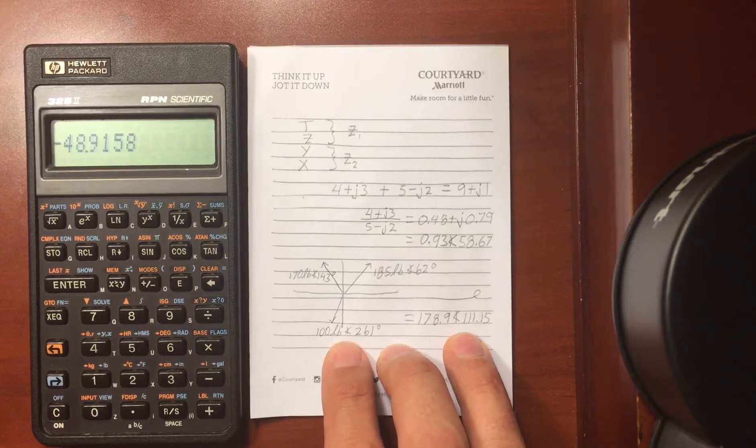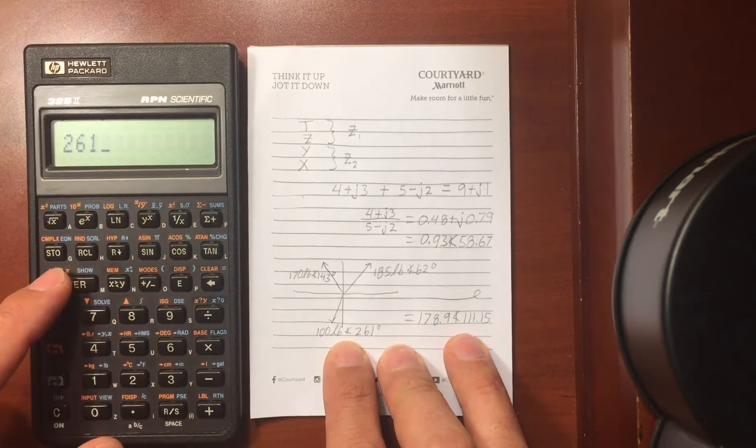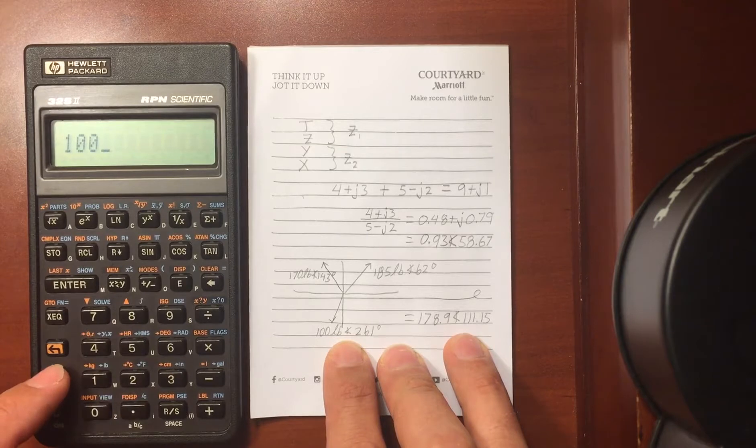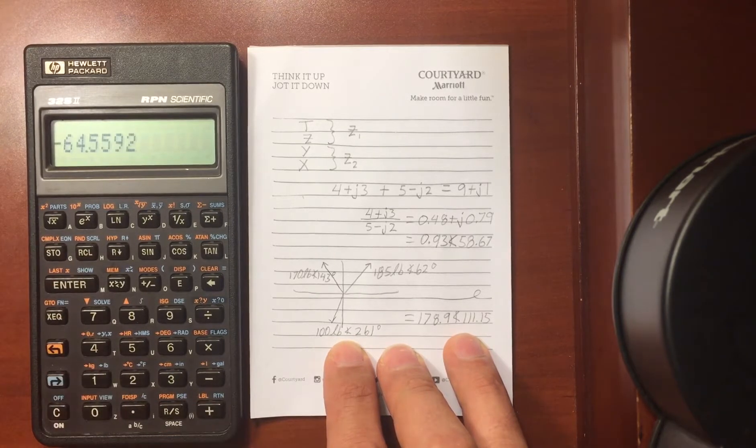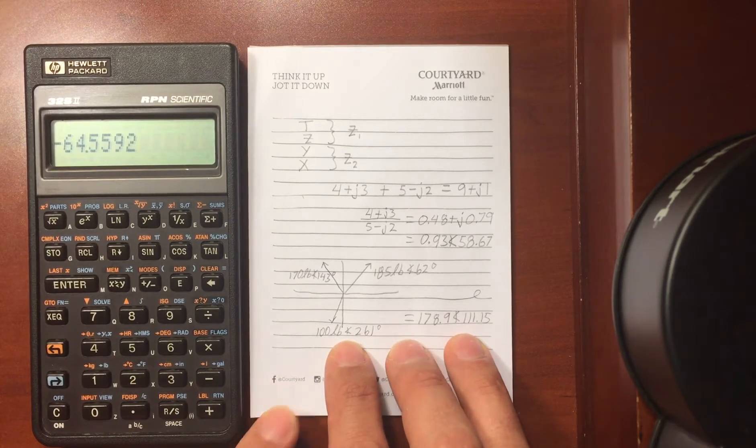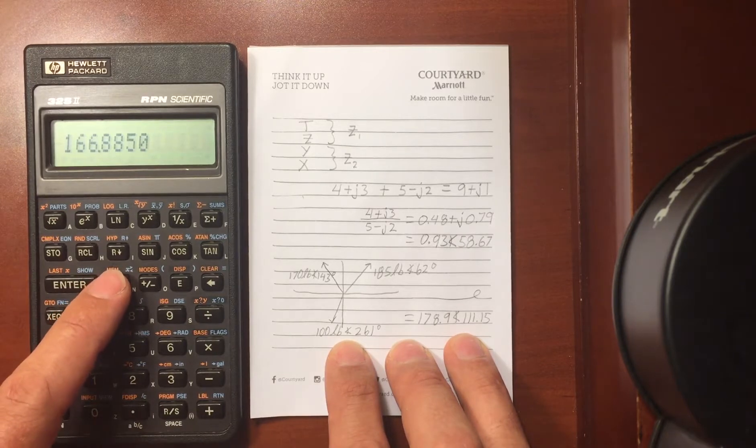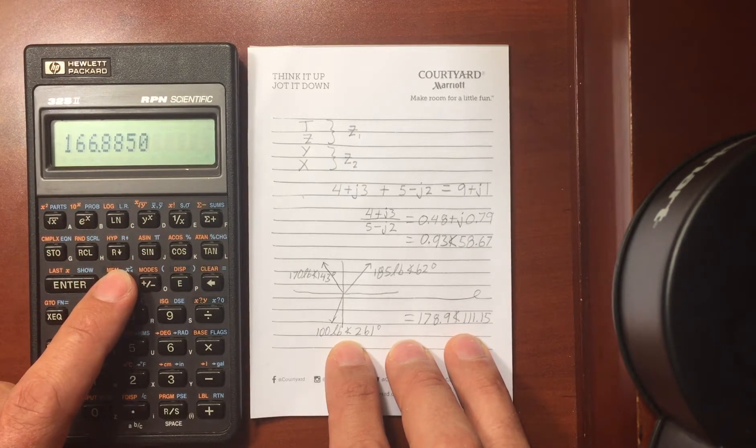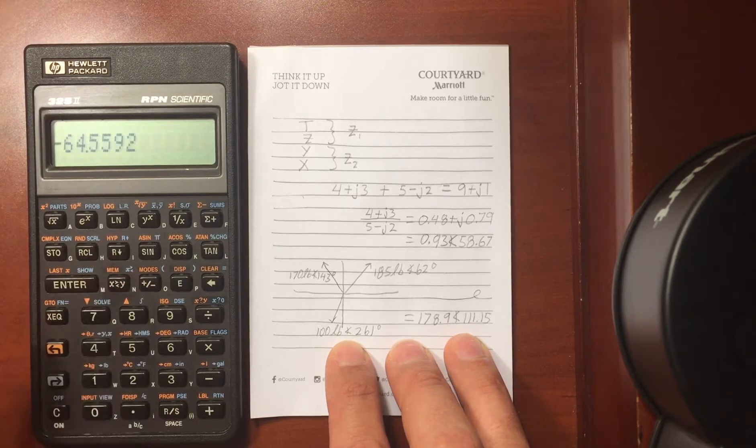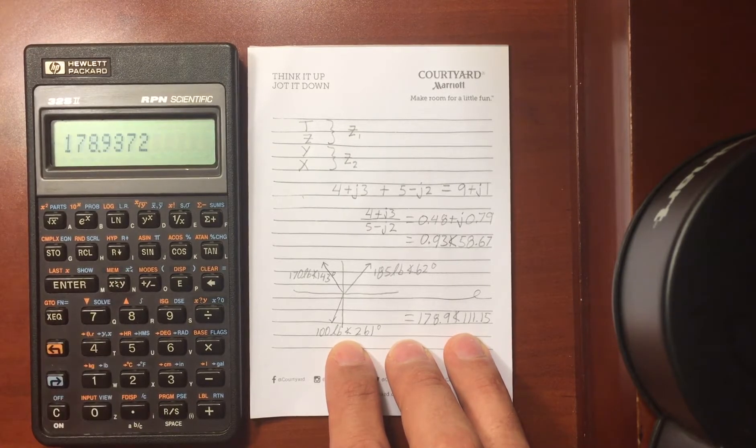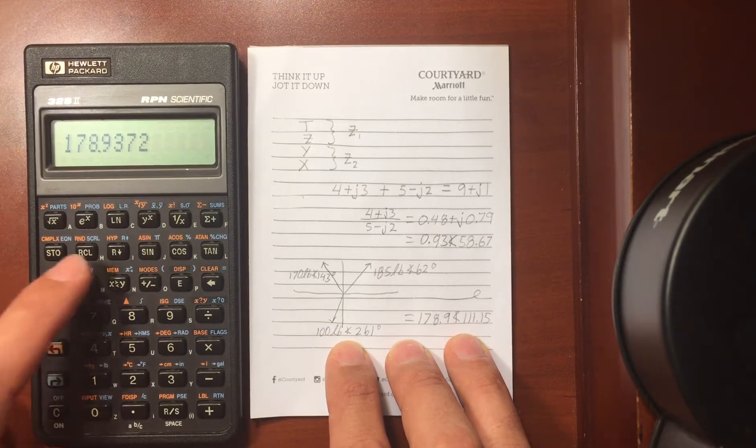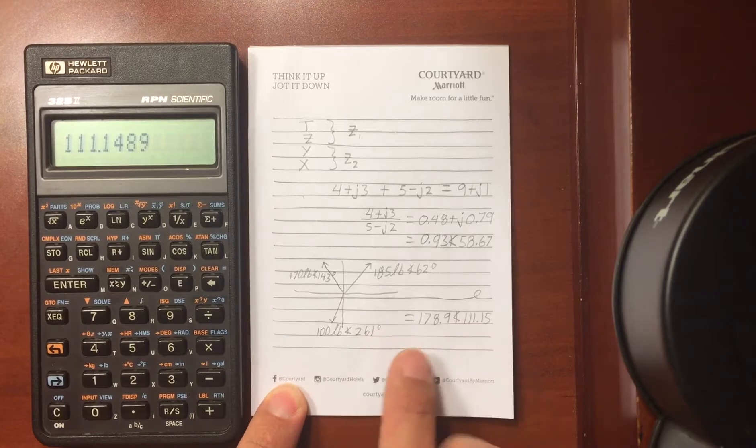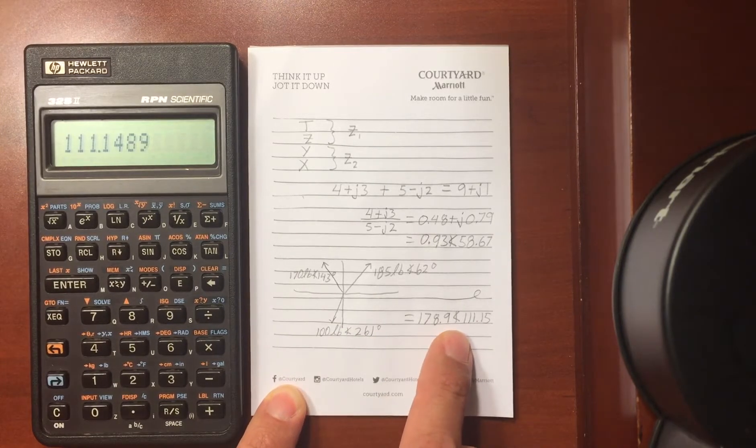So add this last value, enter in 261 as the angle, and 100 is the magnitude, convert it to rectangular, then perform the final complex addition. Convert it back to polar coordinates and I've got 178 for the magnitude, and 111 for the angle, which is what I figured I should have.